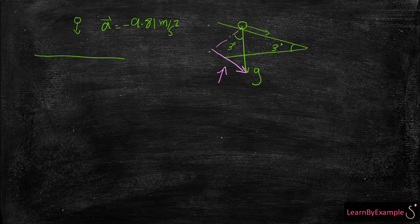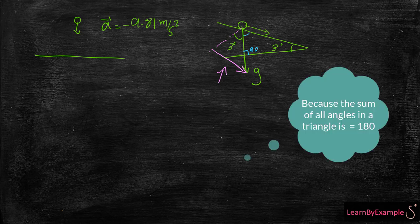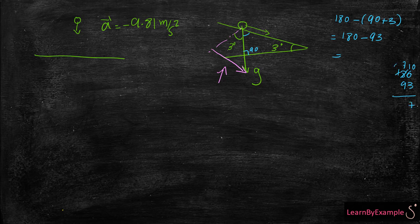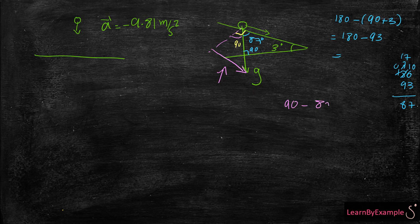Now how do I find out what that component is? If my hill is, for example, 3 degrees, then by similar triangles, this angle is also going to be 3 degrees. It's because if this is 3 degrees and this angle is 90 degrees, then the remaining angle is 180 minus 93, which equals 87 degrees. So if that's 87 and this yellow part is 90, then the pink part is 90 minus 87, which is 3 degrees.